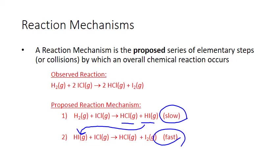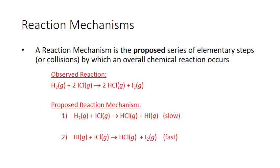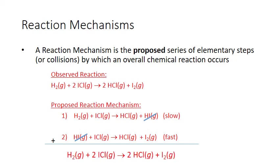The collision with the highest activation energy is classified as the slowest step in the mechanism and the others as faster. Notice that if we add the two elementary steps together, we get the observed net reaction. Hydrogen iodide is a product in step one and a reactant in step two, so since it's both a reactant and a product in the same amount, it cancels out when we add the two steps together and does not show up in the overall reaction — so it's a reaction intermediate. When we add everything else together, we end up with one hydrogen molecule reacting with two iodine monochloride molecules to produce two hydrogen chloride molecules and one iodine, which is the same as our observed reaction.